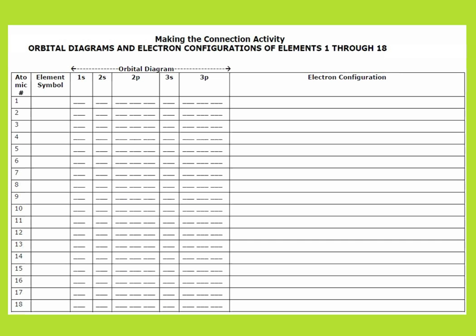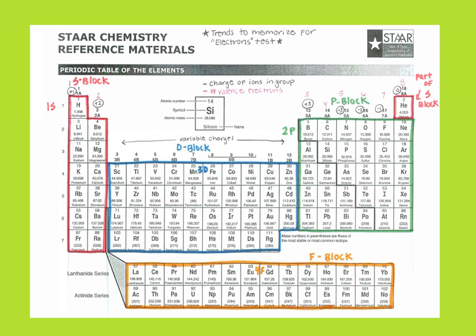Hi chem students. Welcome to a tutorial over drawing orbital diagrams. Please have out your making the connection activity — this should be in your yellow lab notebook. You can get a little bit ahead on this making the connection activity by watching this video. Orbital diagrams are really not as bad as kids make them out to be. They directly correlate with the electron configuration, so we're going to review that first. I'm going to be flip-flopping back and forth between this page and my periodic table, so you want to have both of these out: your colored periodic table and the making the connection activity.